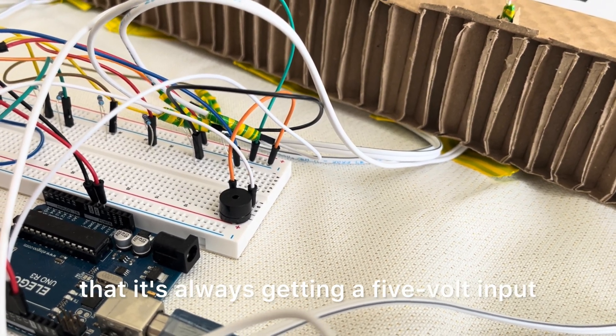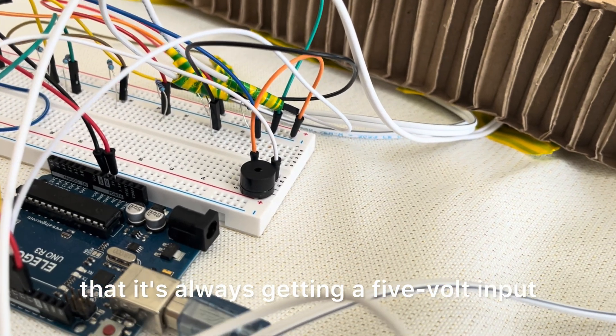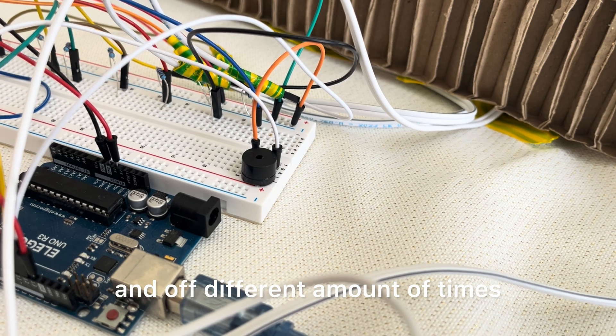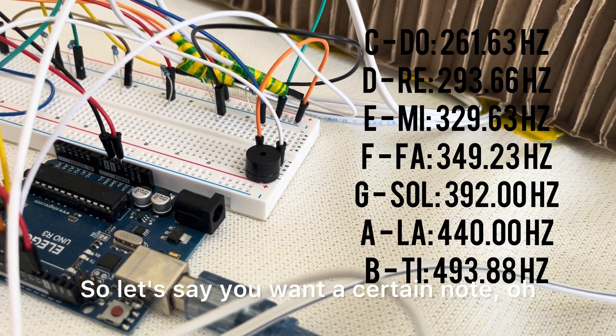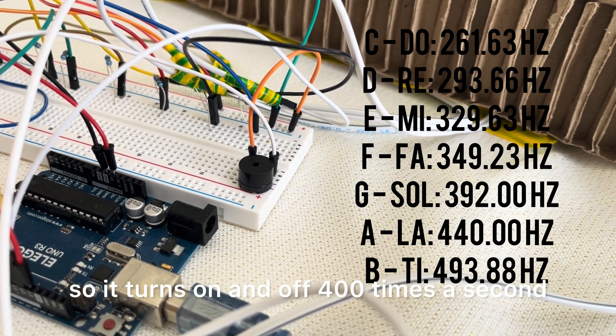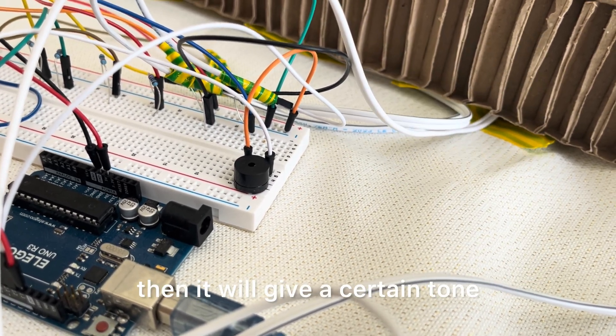Now, the way it works is that it's always getting a five-volt input. Just for different notes, electricity is going to turn on and off different amount of times. So let's say you want a certain note. If it turns on and off, or its frequency, let's say 400, so it turns on and off 400 times a second, and it will give a certain tone.